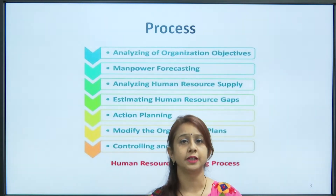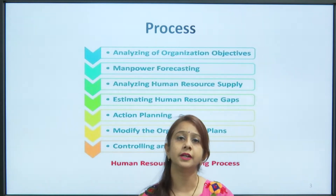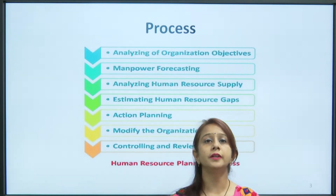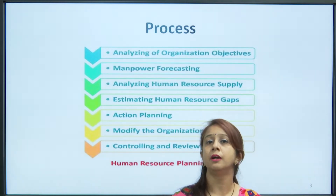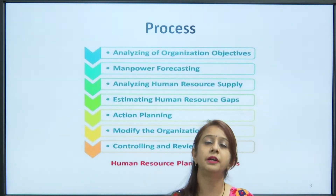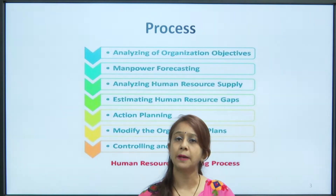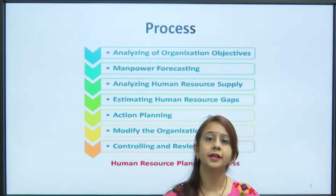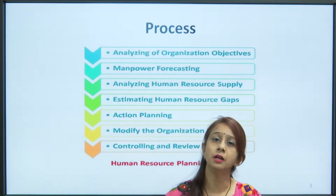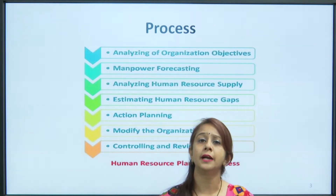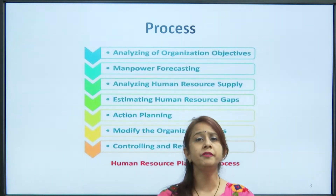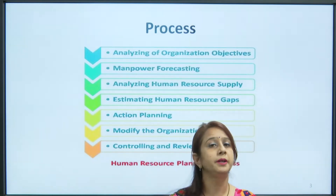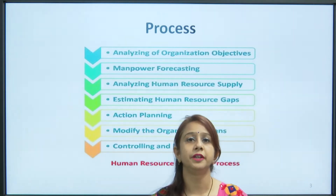The human resource planning process has the following steps. The first is analyzing organizational objectives. If the objective is to expand in an overseas market, this will drive the need to hire people who are expert in international aspects. The company will focus on the types of products it will serve internationally, who will market those products, how revenue will be generated, and any credits required. All these objectives will lead to certain planning and determining how many people will be needed to perform these activities.